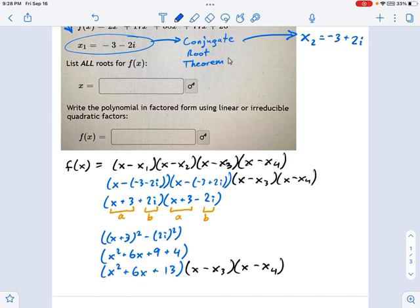That is an irreducible quadratic. That's what we were kind of shooting for here. See right here where it says irreducible quadratic factors. So I've got one of them right now. I just need to figure out what x minus x3 and x minus x4 are. What are those factors?